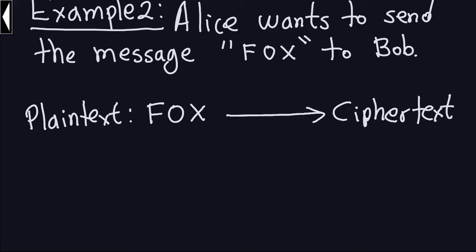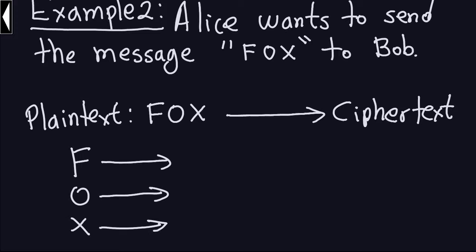Remember, the ciphertext is produced by encrypting the message 'Fox' using a cipher — in this case, shifting the letters three positions to the right. That's the cipher Alice and Bob agreed on. So we have the letters F, O, and X, and we're going to transform each letter into another letter using this cipher.